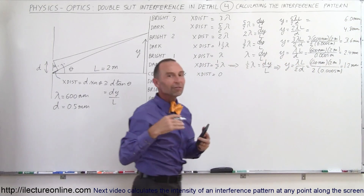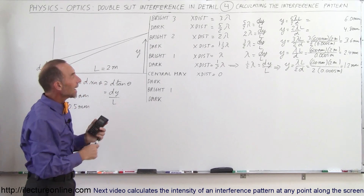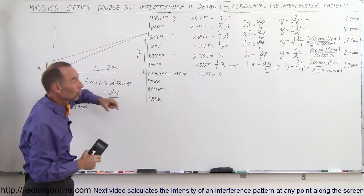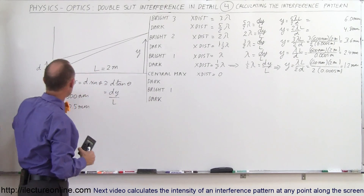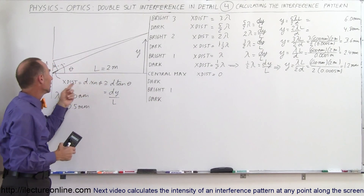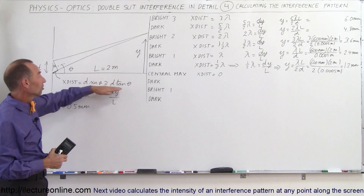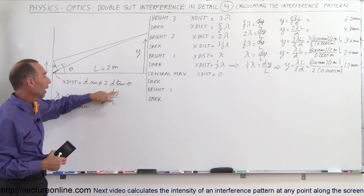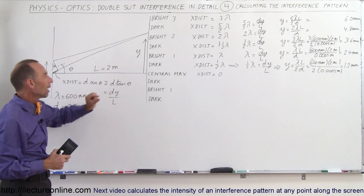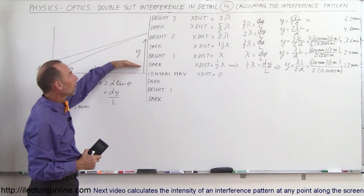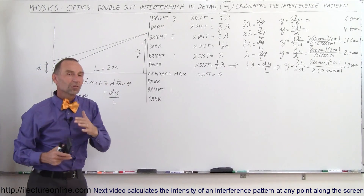That's how you find the interference pattern — by taking the extra distance traveled in terms of wavelengths, setting it equal to the geometric expression d·sin(θ), which is the same as d·tan(θ) or dy over L, then solving for y. That tells you the locations of all the dark and bright spots.